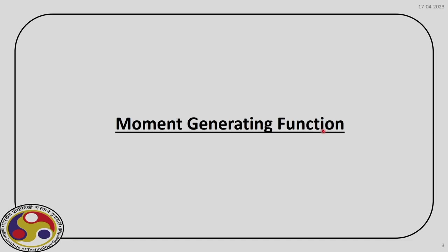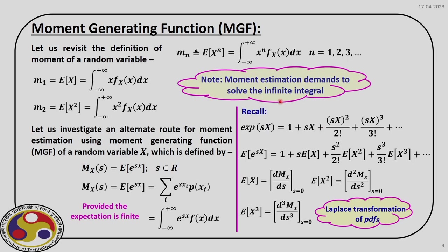Let us start with moment generating function. If you recall, we have already defined random variable and its moments. The nth moment of a random variable x is defined by this expectation operator, which is the integral from minus infinity to plus infinity, because that is the range of this random variable whose PDF is defined by f_x(x). The nth moment is x to the power n, multiplied by f_x(x), integrated over the complete range. As we keep on changing n from 1, 2, 3 and on, we get different moments.